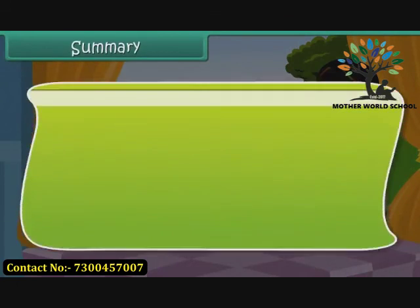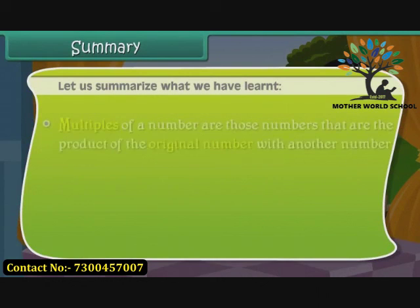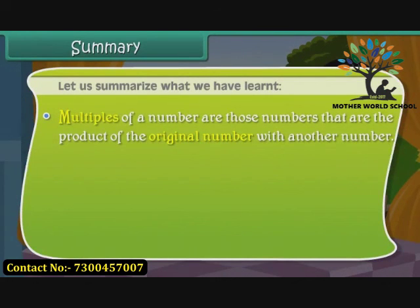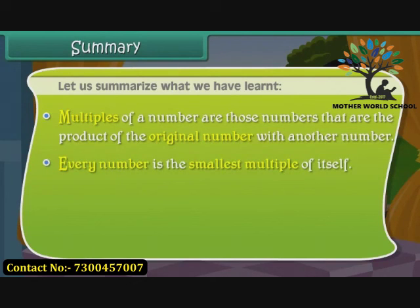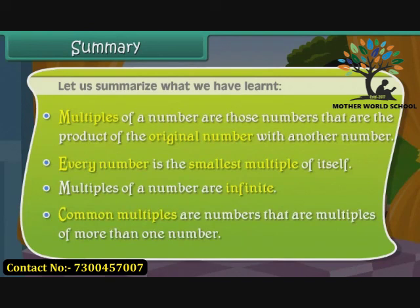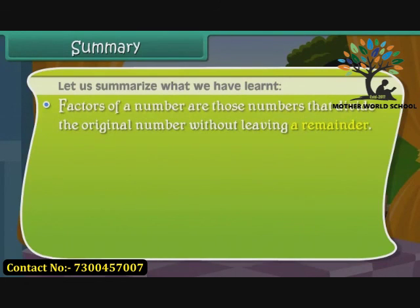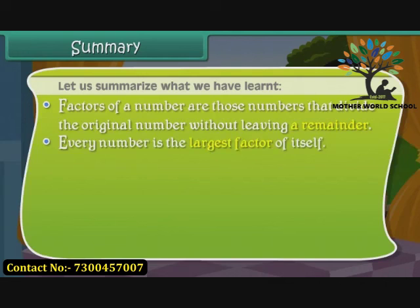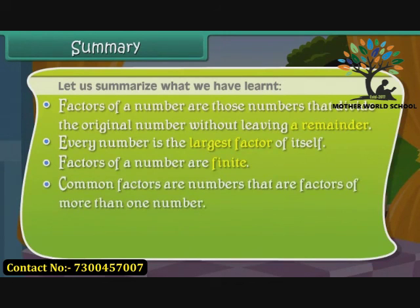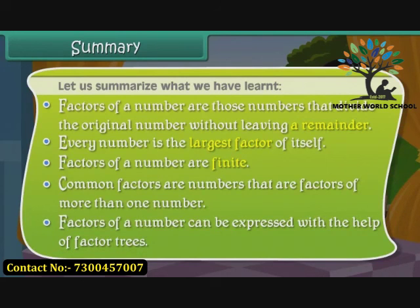Summary: Multiples of a number are those numbers that are the product of the original number with another number. Every number is the smallest multiple of itself, and multiples of a number are infinite. Common multiples are numbers that are multiples of more than one number. Factors of a number are those numbers that divide the original number without leaving a remainder. Every number is the largest factor of itself, factors of a number are finite, and common factors are numbers that are factors of more than one number. Factors can be expressed with the help of factor trees.